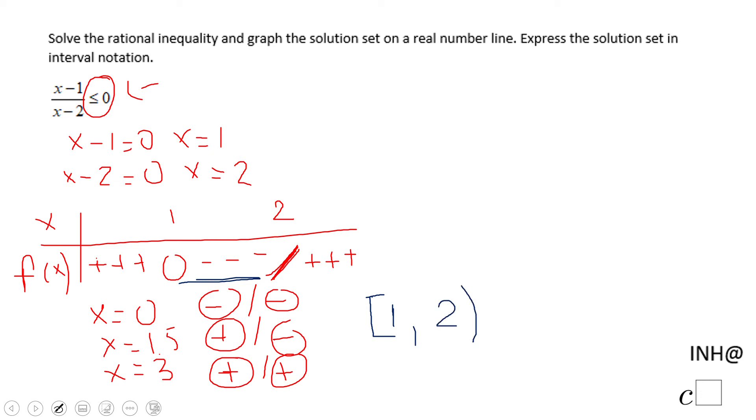And then 2, I need to be careful, put a parenthesis. The function is undefined at 2. The interval on which this rational function is less than or equal to 0 is 1 to 2, closed at 1, open at 2.